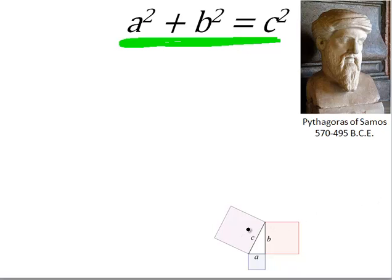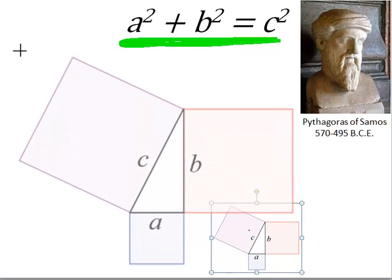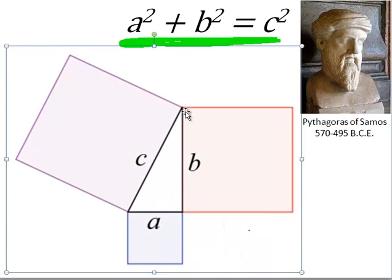Because what he noticed one day was, if you took a right triangle and took the length of one of the sides and squared it, and took the length of the other short side and squared that, you would have two squares with different area. And he noticed that if you combined the two areas, you would get an area that was equal to this side squared.